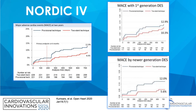The more recently published Nordic 4 trial looked at outcomes in patients who received either a provisional technique or two-stent technique. The curve seemed to favor a two-stent technique, though this was not significant. When we looked at first generation DES, there was not a significant difference between the two groups, but this difference seemed to widen with newer generation DES.